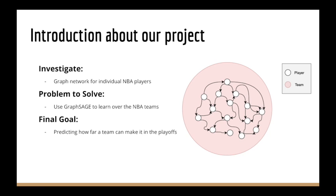In this paper, we are investigating the social network for individual NBA players and the relationship between each team. We will try to solve how to implement GraphSAGE to learn over the NBA players' datasets and find the correlation between the teams that make the playoffs and those that do not.